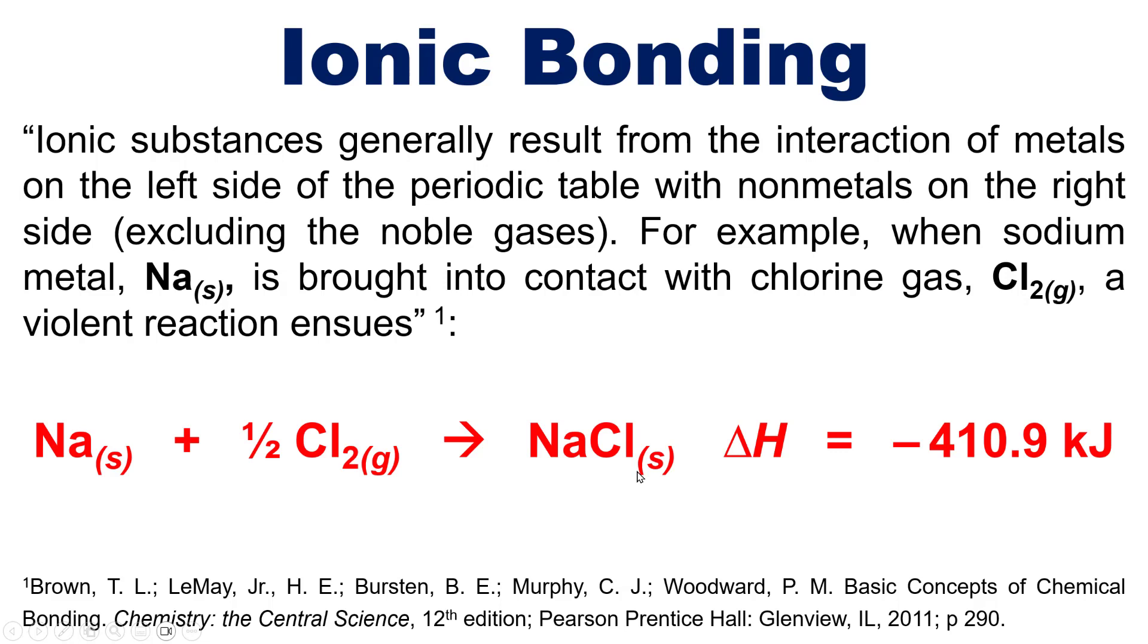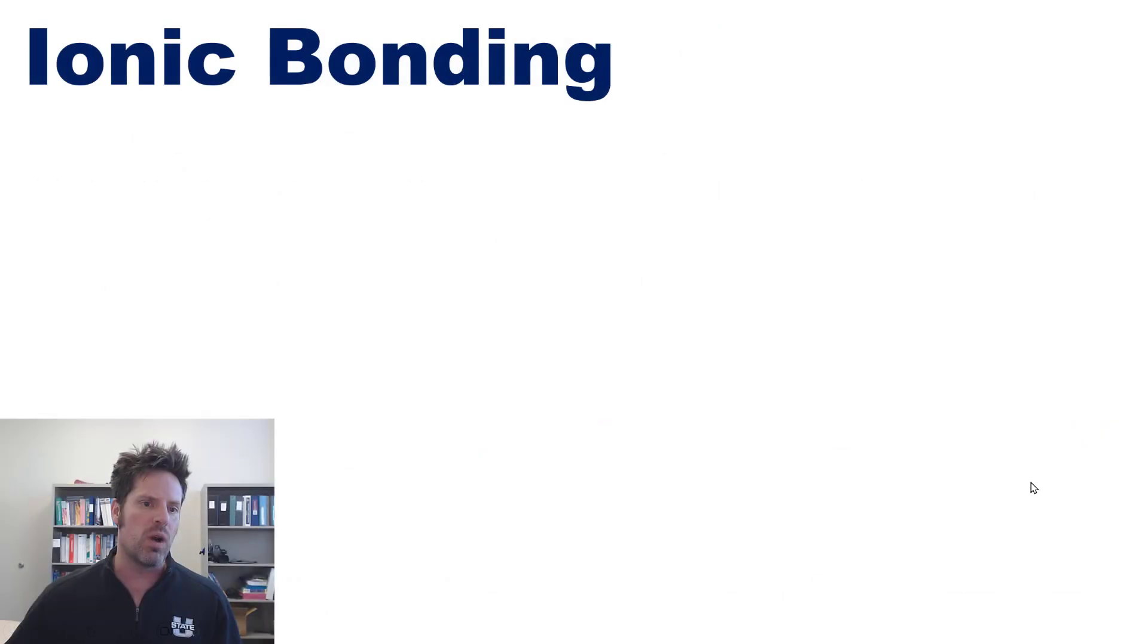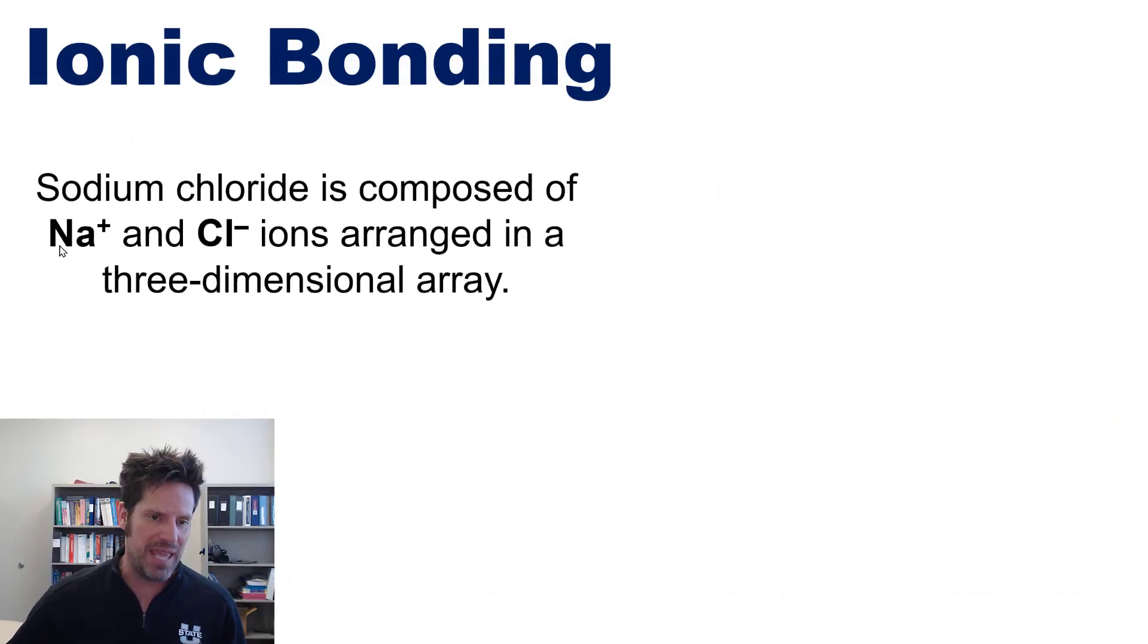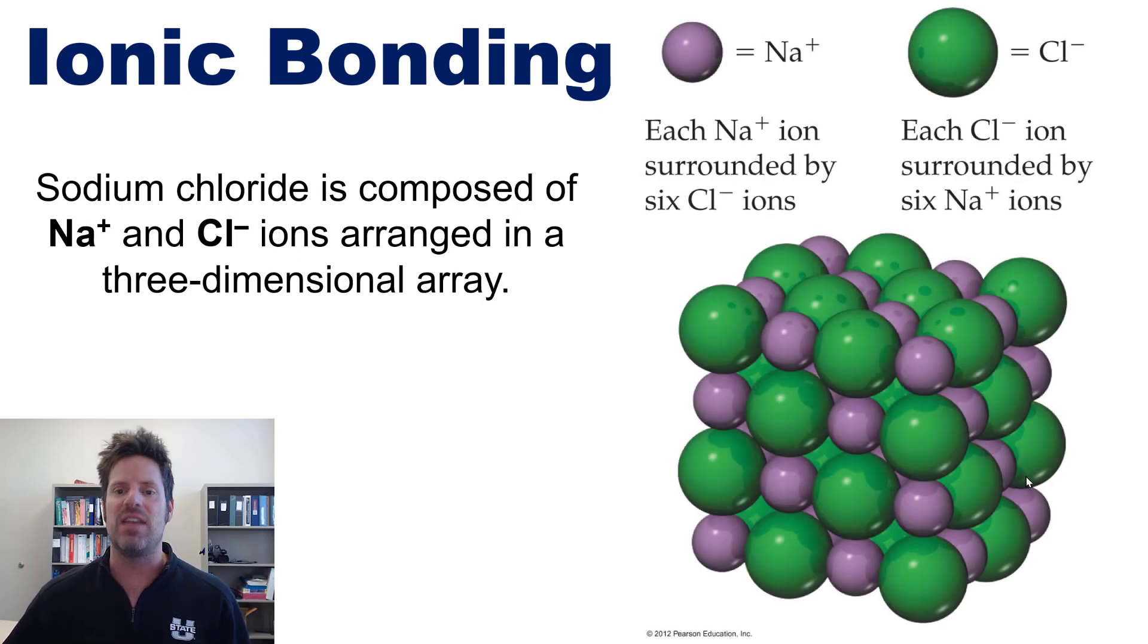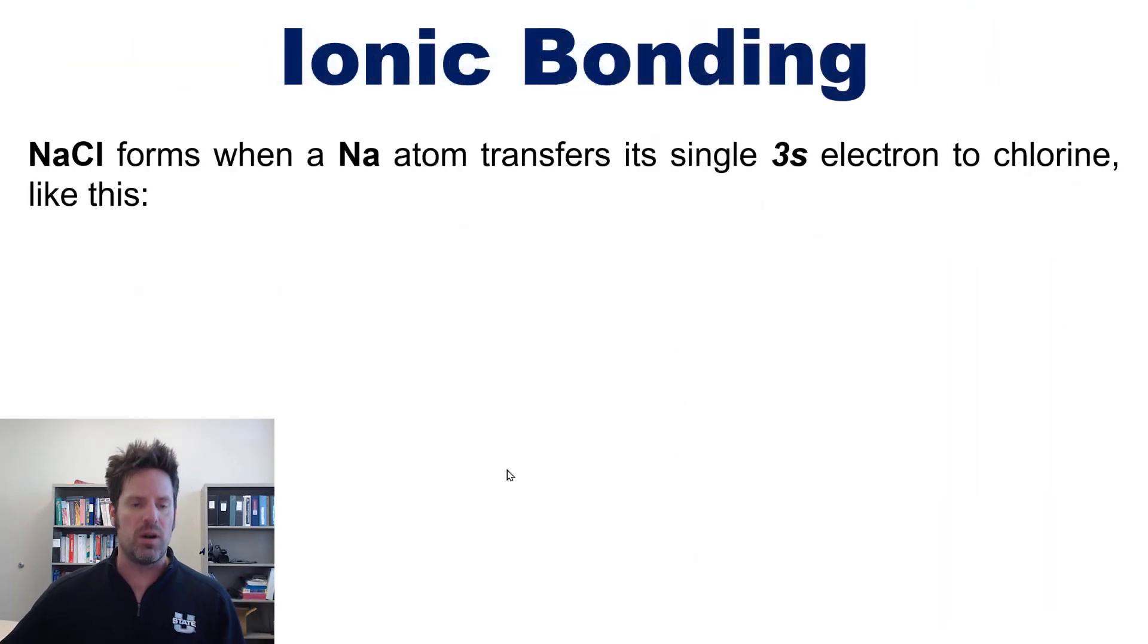The product sodium chloride is shown right here. You can see because the delta H is strongly negative, this is a very exothermic process. Now sodium chloride is composed of sodium cation and chloride anions arranged in a three-dimensional array depicted at an atomic level in this figure taken from our text.